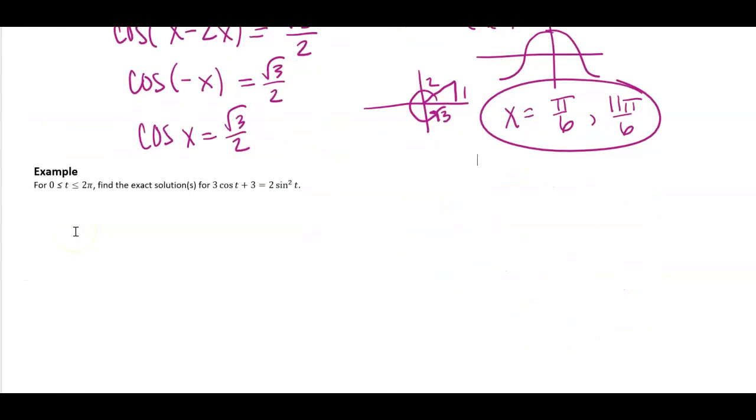Alright, let's look at another one. So this one has a cosine in it and a sine squared. That seems really yucky. So the first thing I'm thinking is let's get this into maybe like a cosine squared and cosine situation and then solve it like a quadratic.